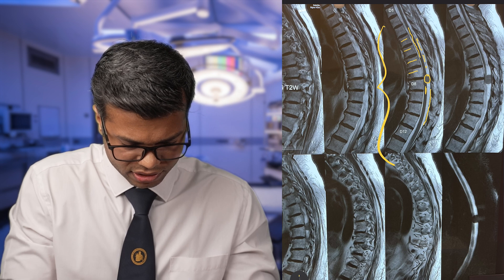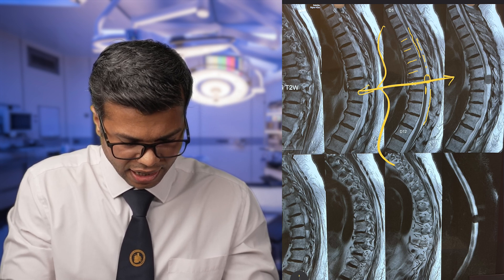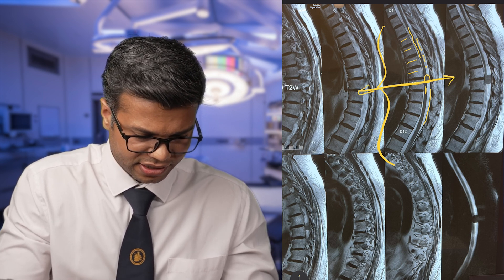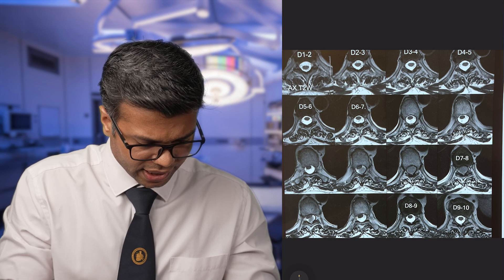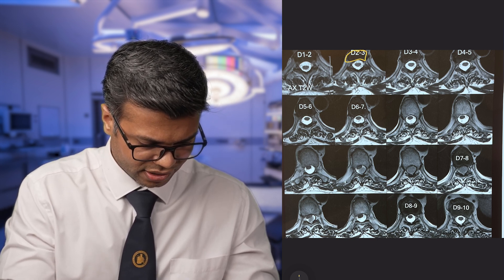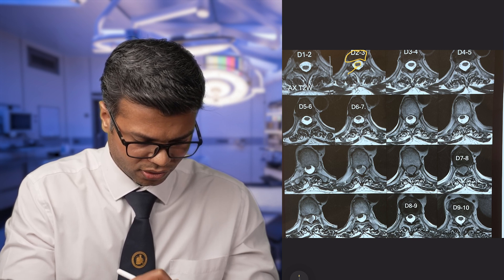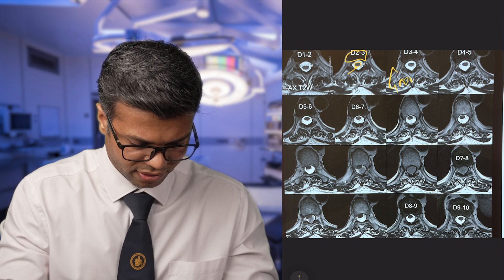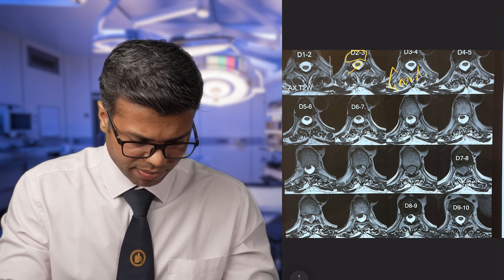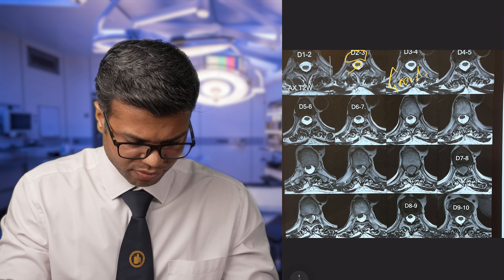Now let's look at the axial sections — a cross section taken at this level. On axial view, you can see the vertebral body in the front, the white spinal fluid surrounding it, and the central gray structure which is the spinal cord. This is how it should normally look.